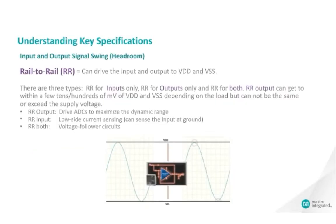The input and output signal swing are also referred to as headroom. When the headroom is rail-to-rail, the op-amp can accept the input or drive the output to the positive and negative supply voltage levels. There are three types: rail-to-rail for inputs only, rail-to-rail for outputs only, and rail-to-rail for both. Rail-to-rail outputs can drive ADCs to the maximum dynamic range. Rail-to-rail inputs can sense the input at the lowest level. Rail-to-rail for both input and output helps maintain the dynamic range of the input signal. Note that rail-to-rail outputs can get to within a few tens or hundreds of millivolts of VDD and VSS, depending on the load. However, they cannot be the same as or exceed the supply voltage.